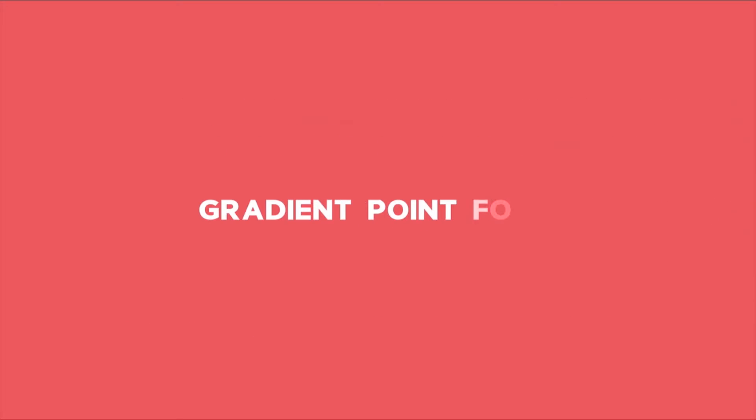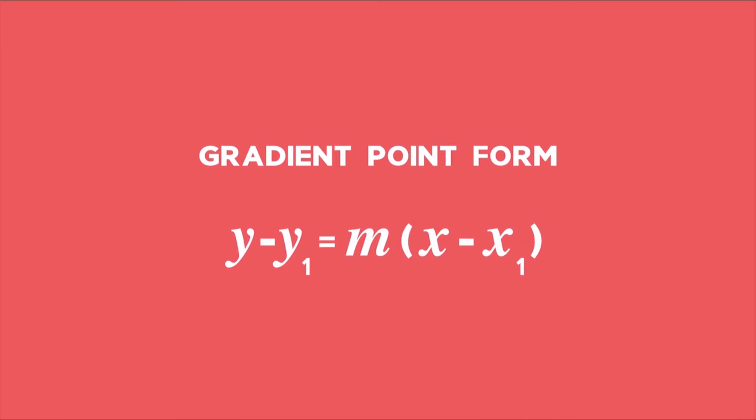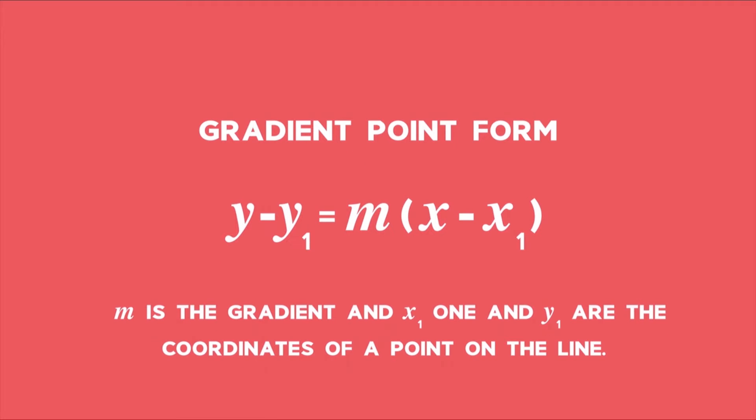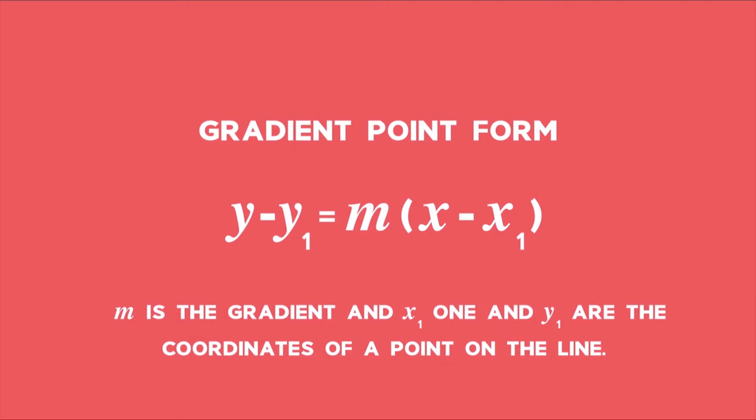The second one is the gradient point form: y minus y1 equals m multiplied by the difference of x and x1. m is the gradient and x1 and y1 are the coordinates of a point on the line. The third one that is not used very often is the intercept form, which is x divided by a, where a is the x-intercept of a line, plus y divided by b, where b is the y-intercept of the line, equals 1.